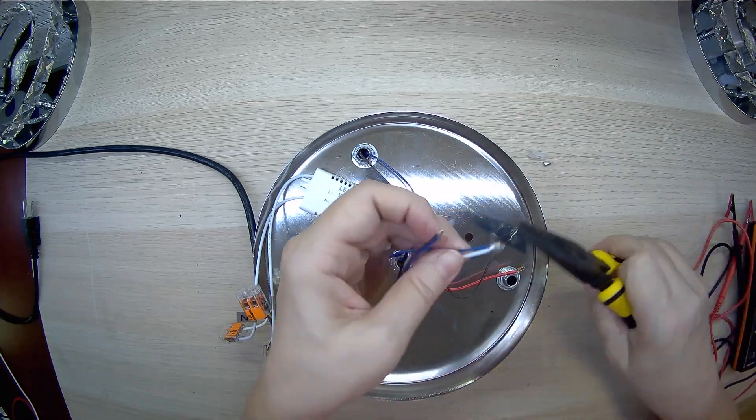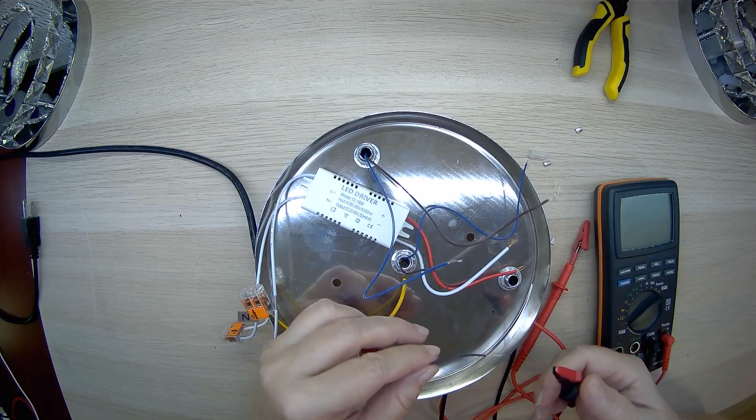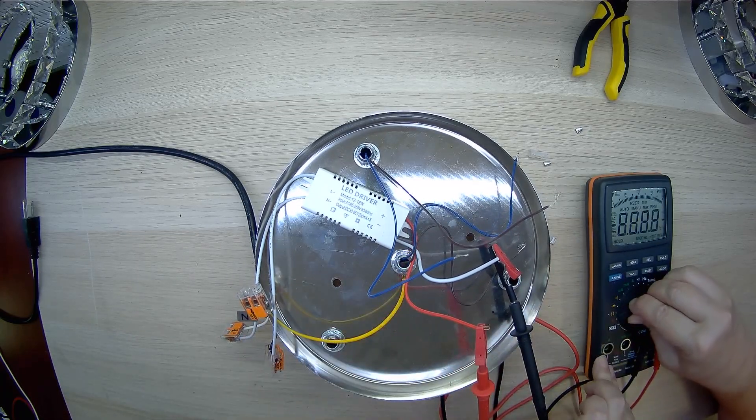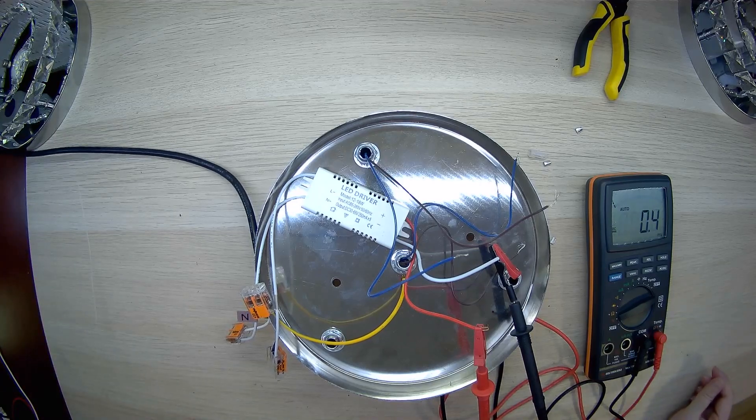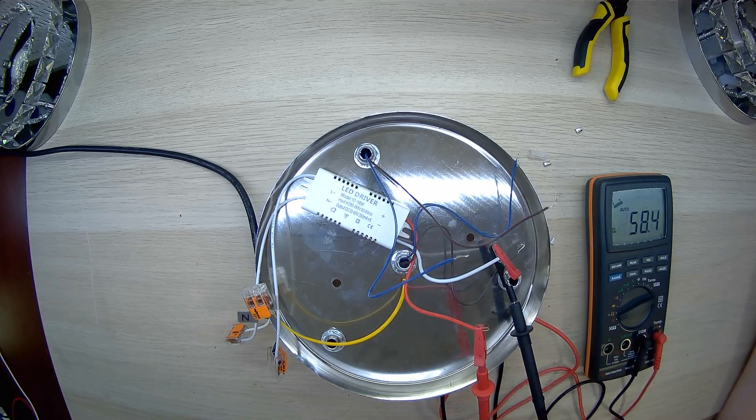First we check the driver. We connect our advanced Octacom M1060 multimeter. There's a link about its capabilities in the description under the video. We connect power and see voltage of 58 volts at the driver output. Great, the driver is OK.